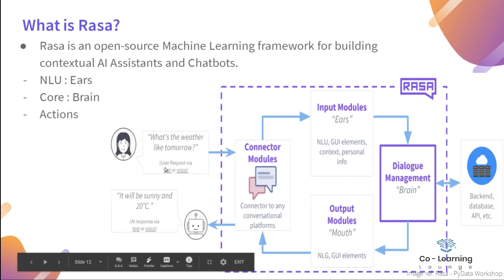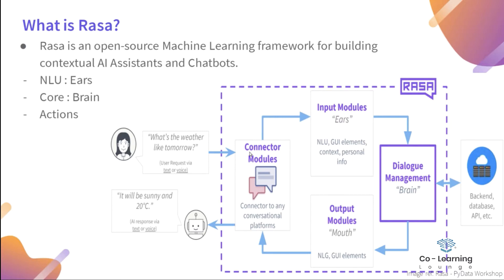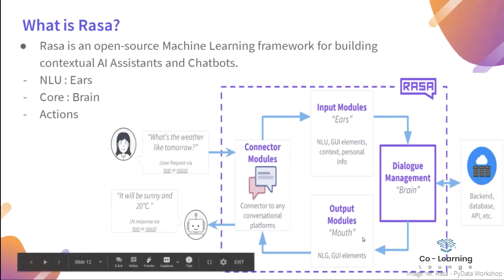When I say 'what's the weather like tomorrow', it can be a text or voice query. It goes to a connector module - that could be your Telegram channel, Facebook channel, Skype, or website. You talk to the bot on that channel, and it hits the NLU part which does intent classification and entity extraction. Then it goes to dialogue management where it looks at all the context and next possible response. If required, it can hit the backend or database API, then respond back to the user through the output module, which could be text or voice.